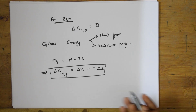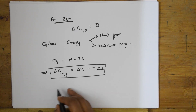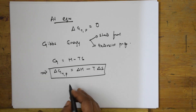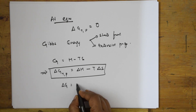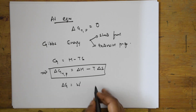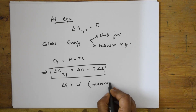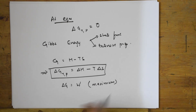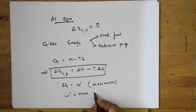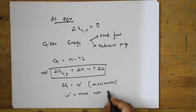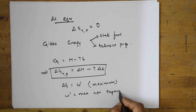When will we have maximum work? When ΔG equals w-prime. This w-prime denotes the maximum non-expansion work.